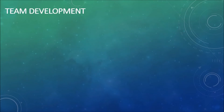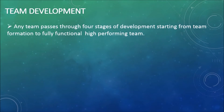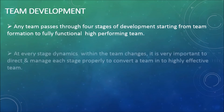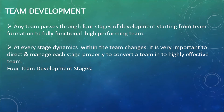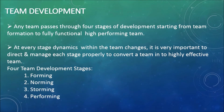Team development. Any team passes through four stages of development, starting from team formation to a fully functional high-performing team. At every stage, the dynamics within the team change, and it is very important to direct and manage each stage properly to convert a team into a highly effective team. The four team development stages are: forming, norming, storming, and performing.